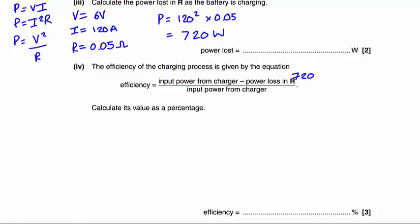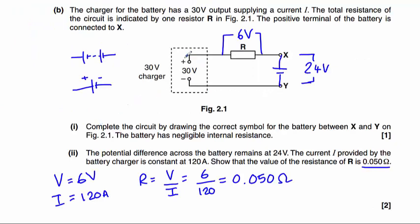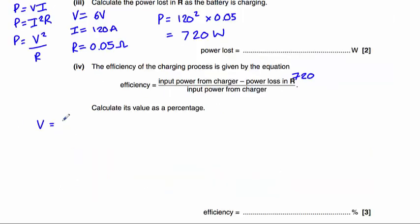If we look back to the previous part of the question, we can see that the charger is at 30 volts, and we know that it is producing a current of 120 amps.